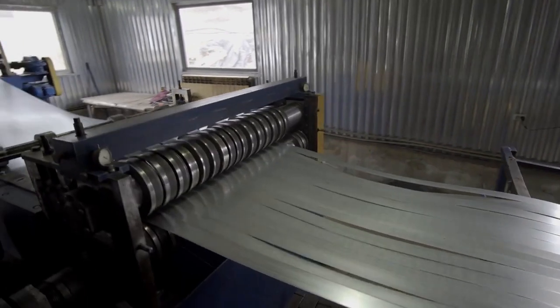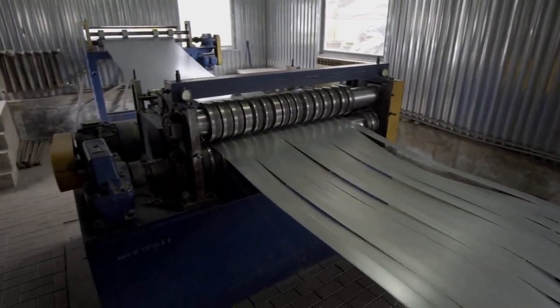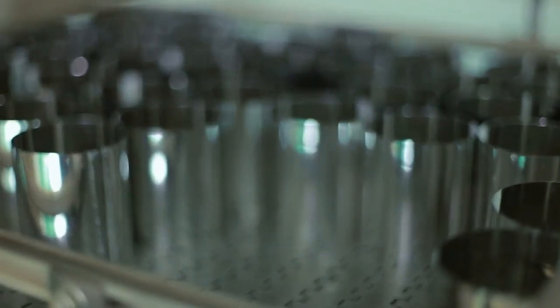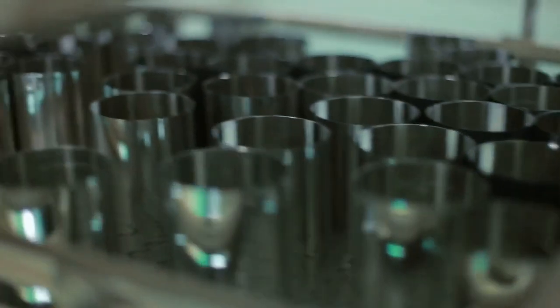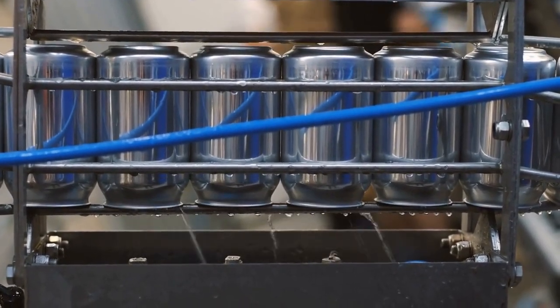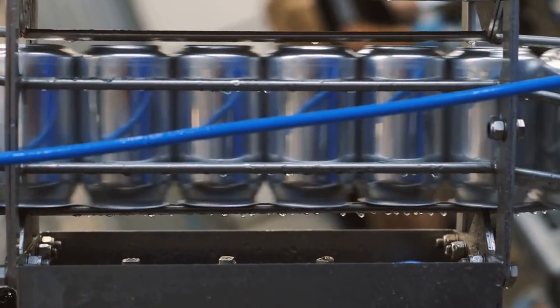A soda can is made up of several layers, including the outer layer of aluminum, an interior lining to prevent the beverage from coming into contact with the metal, and a coating to protect the print and graphics on the can. As the cans move down the production line, they are first cleaned and sanitized to ensure they are free of debris and bacteria.